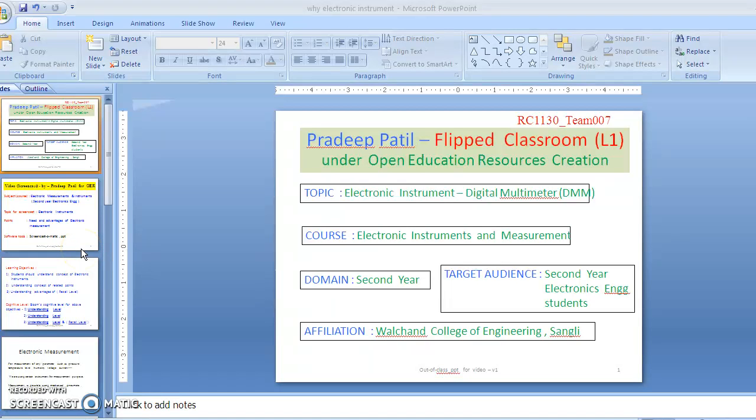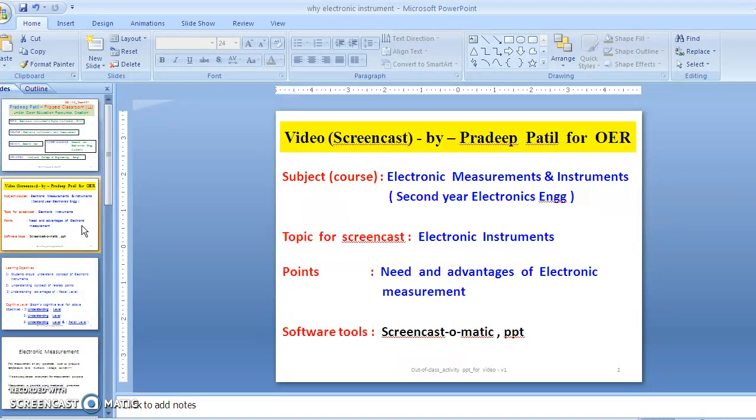Under the Open Education Resource creation activity of ICT course, I am from RC1130 Team 007, member Pradeep Patil. We are creating flipped classroom videos. The topic we have selected is electronic instruments, specifically digital multimeter. This is meant for the course Electronic Instruments and Measurement for second-year Electronics Engineering students.